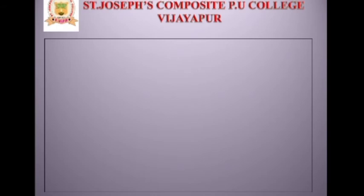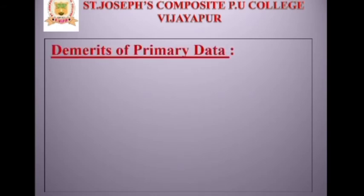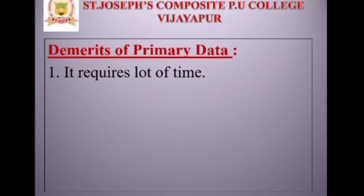Now, what are the demerits or disadvantages of primary data? First, it requires a lot of time — it is time consuming. Primary data takes too much time to collect because the investigator collects information directly from the population, and it requires a lot of time to conduct the research from beginning to end, collecting each and every piece of information from the field.